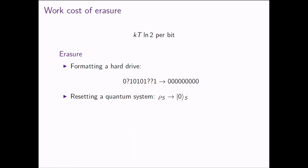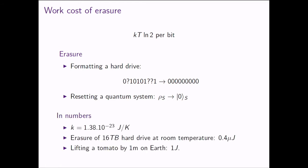To give you some numbers: the constant k is very, very small, such that the erasure of a 16-terabyte hard drive at room temperature costs 0.4 microjoules. For comparison, lifting a tomato by one meter on Earth costs one joule. These fundamental limits are still very far from what the industry can achieve, but they will become relevant at some point and are interesting on their own.